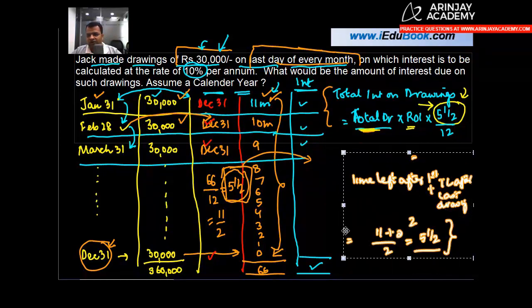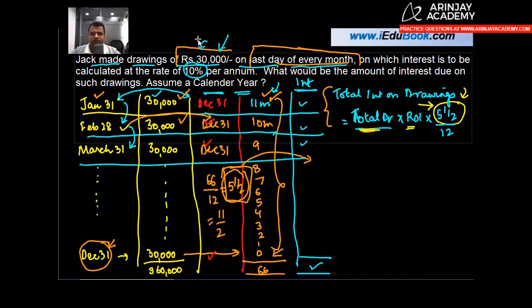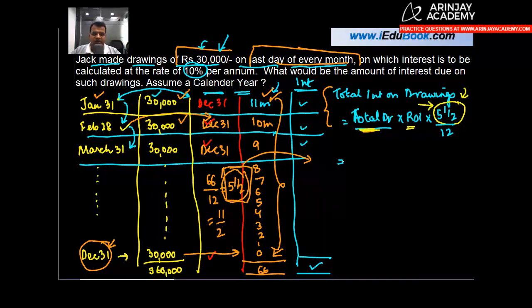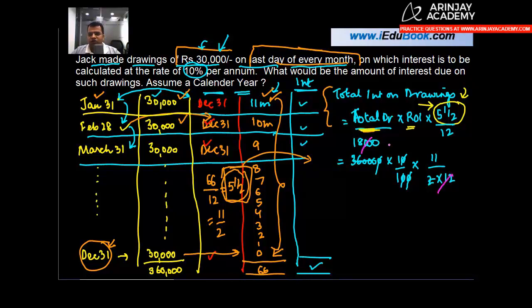How much is the total drawings which I made? 30,000 into 12 or 3 lakh 60,000, into rate of interest 10%, into 5 and a half which is 11 upon 2, into 12. Two divided by this will give you 18,000. Twelve to knock off 18,000 is going to give you 1,500. 1,500 into 11 is 16,500, which is your answer.